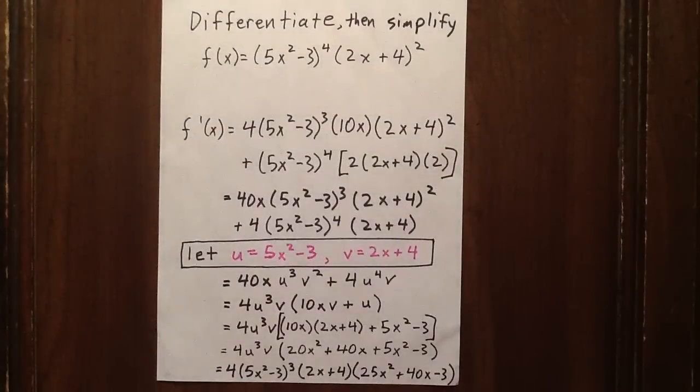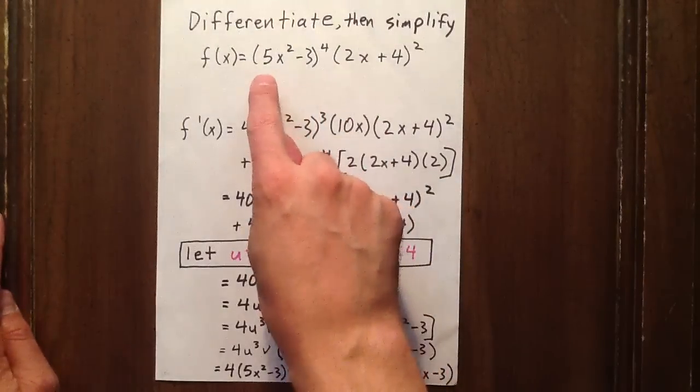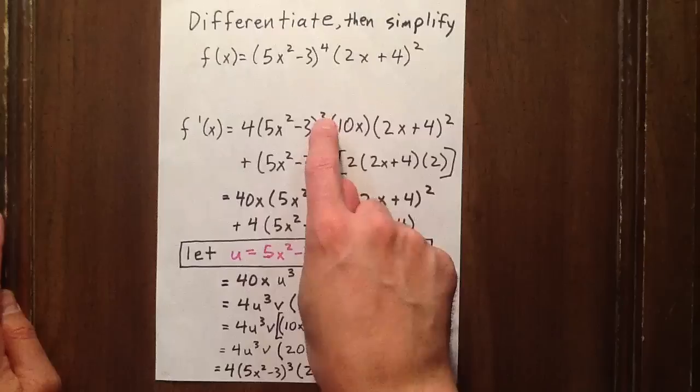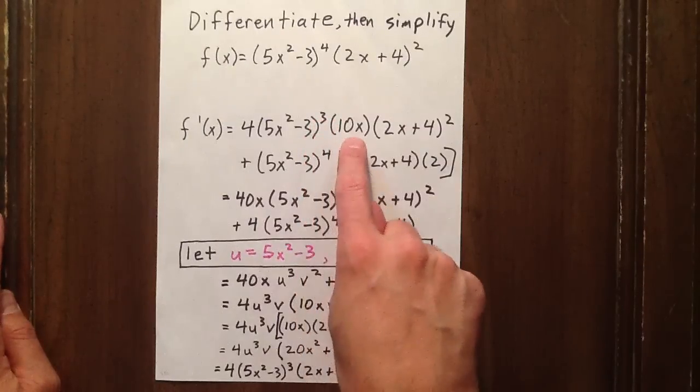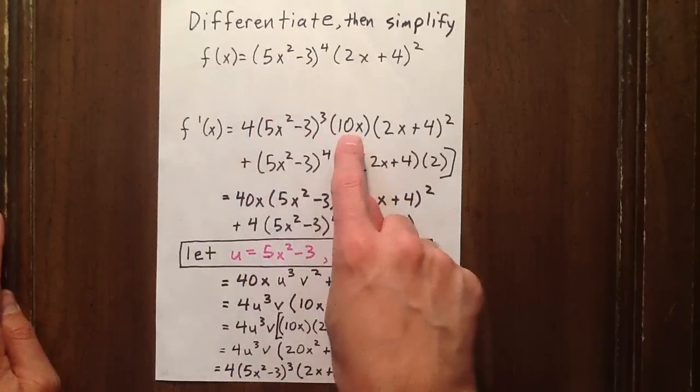We're going to use the product rule to differentiate this expression. We'll take the derivative of the first, which is 4 times 5x squared minus 3 to the exponent 3, and then multiply that by the derivative of the interior, which is 10x.